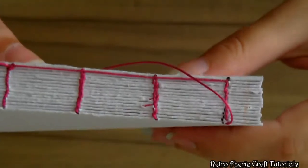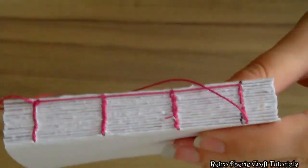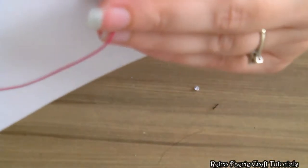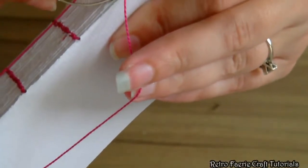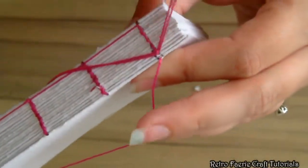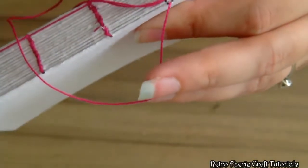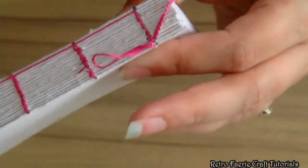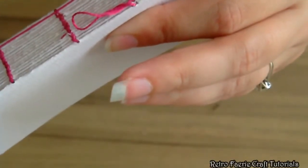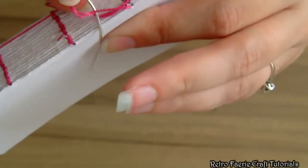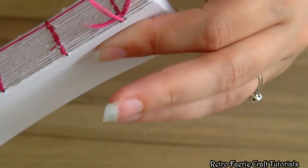This is what it looks like when it's done. To tie it off you literally just go through the last stitch and do a knot. Repeat that a couple of times just so it's nice and secure, and that's the main part of the binding done.